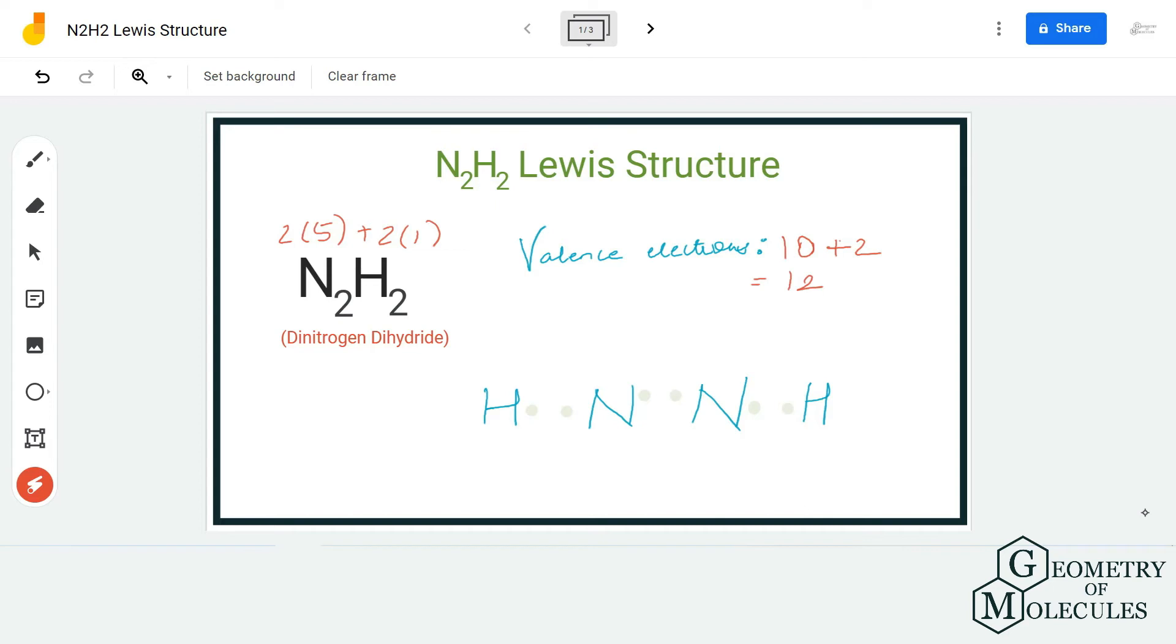Now we move forward to nitrogen atoms. Here after using up six valence electrons out of 12, we are left with six more. So we are going to arrange these electrons around nitrogen atoms to check if we can achieve complete octets for both these nitrogen atoms.